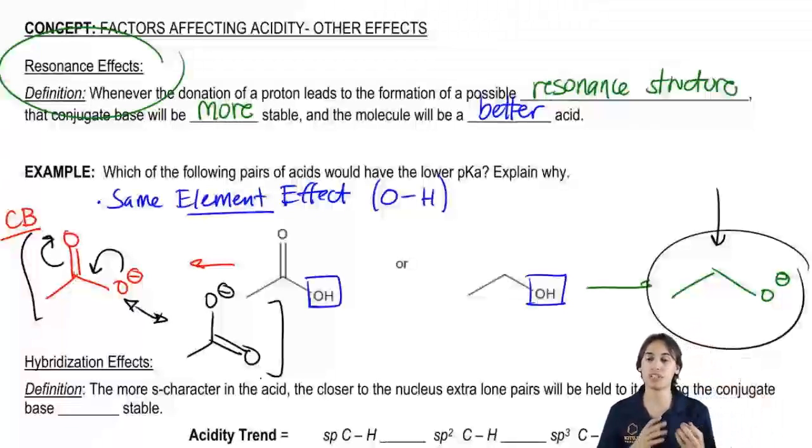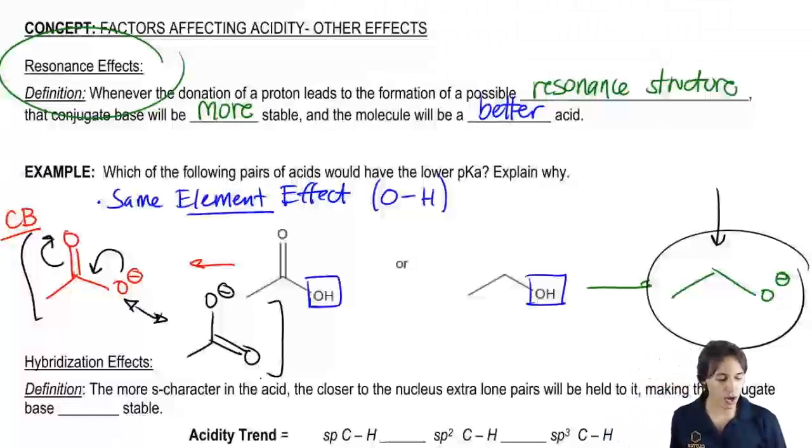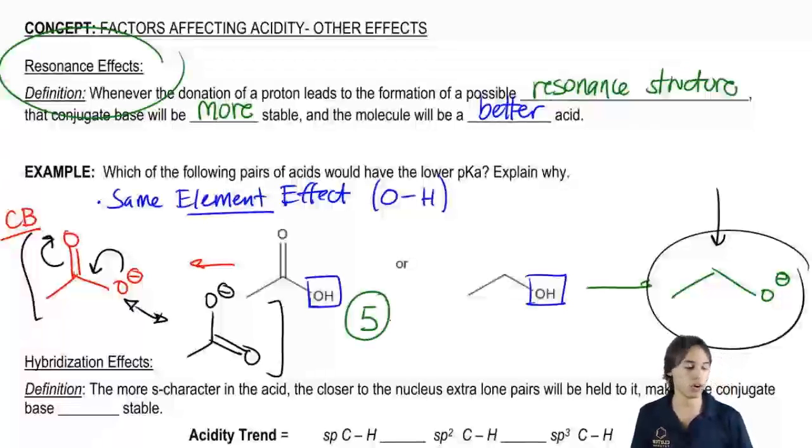So what that means is that I'm able to distribute this negative charge over those three atoms. Isn't that interesting? So what that means is that one of them is going to be way more stable than the other, and that is why carboxylic acid has a pKa of 5 whereas alcohol has a pKa of 16. That's a huge difference.